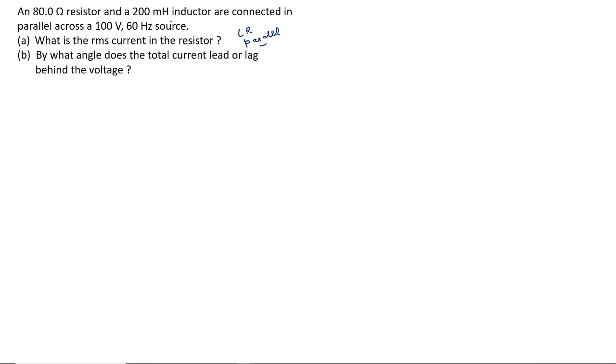An 80 ohm resistor and a 200 mH inductor are connected in parallel across a 100 V 60 Hz source. That means it should be an AC source because frequency is given. Subdivision A, what is the RMS current in the resistor? Subdivision B, by what angle does the total current lead or lag behind the voltage?